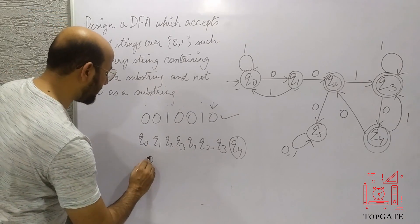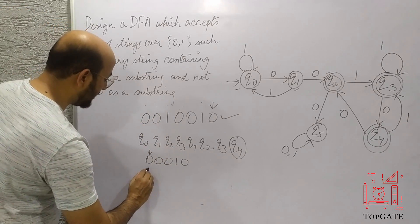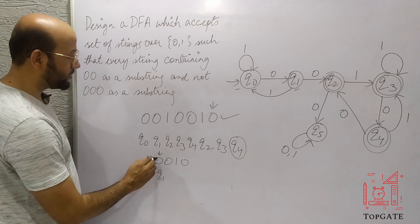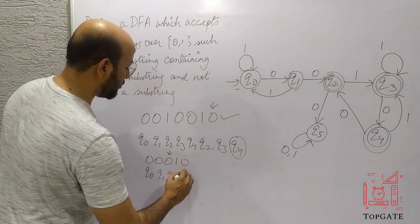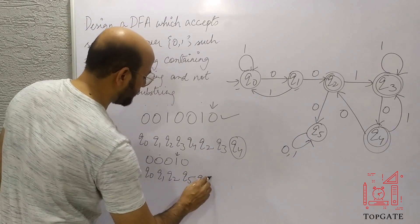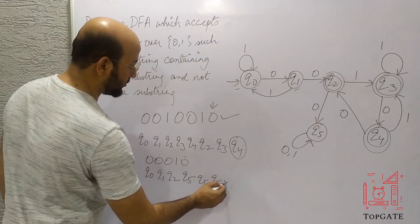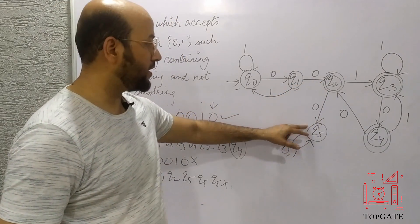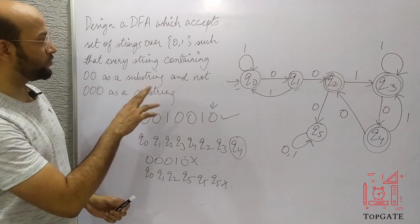Now let's check a wrong string: '00010'. Starting at q0 — read 0→q1, read 0→q2, read 0→q5 (dead state), read 1→q5, read 0→q5. We end at q5, which is not a final state. Therefore, this string is rejected. As soon as we get the third 0, we go to the dead state from which we cannot reach any final state. So this is the complete and correct DFA for this language.